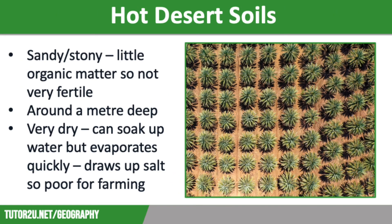We're going to round off the video by looking at the soils found in hot deserts, as these are extremely important in dictating the vegetation found in this biome. In hot deserts, soils tend to be sandy or stony with little organic matter, due to the general lack of leafy vegetation and water, meaning they are not very fertile. They are formed mainly by weathering, creating deposits of sand and other loose material, and are usually around a metre deep, apart from where sand dunes have formed, enabling deeper soils to potentially develop.